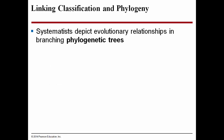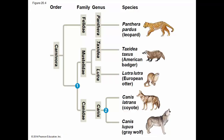Systematists depict evolutionary relationships in branching phylogenetic trees. The phylogenetic tree is how we understand these evolutionary relationships in picture form. Here's a phylogenetic tree of carnivores — all in the order Carnivora. Three different families are represented: Felidae, Mustelidae, and Canidae. Canidae includes all the dogs: Canis lupus and Canis latrans, and also the domestic dog Canis familiaris.